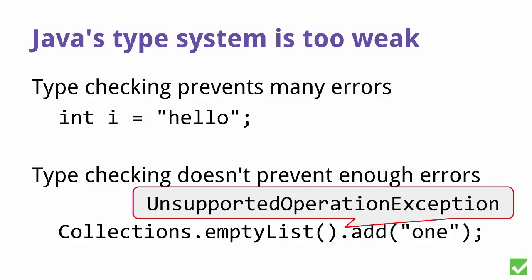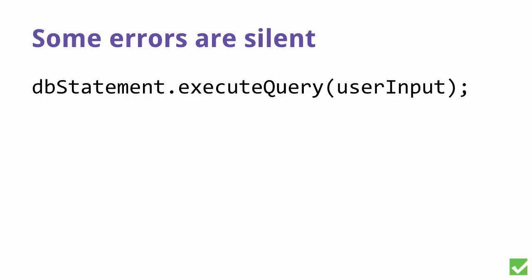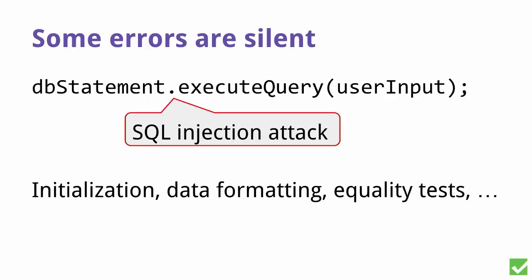Again, these are the cheap failures — these are the easy cases. The hard cases are ones that are silent. For instance, if you create a map and then side-effect a key in that map, you'll corrupt the map. Another error is a SQL injection attack — if you execute some string that comes from a user, they could get access to all of your data or destroy it.